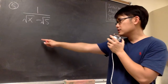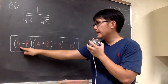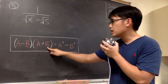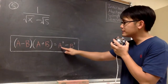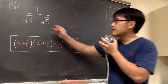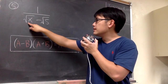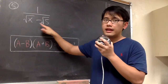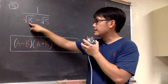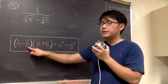Here's the formula right here. The formula says, if we have a parenthesis (a minus b) times another parenthesis (a plus b), we will end up with a squared minus b squared. We can see that our original expression has a denominator of square root of x minus square root of 5, which is like the a minus b, where the square root of x is the a part and the square root of 5 is the b part.